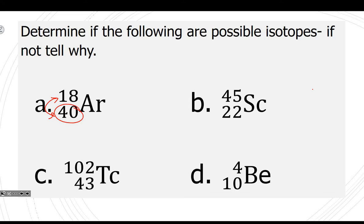On option B, you find element 22 on the periodic table, but the symbol given is Sc, which is wrong — so that's a problem, it's not the right symbol. For option C, 43 is technetium and 102 is close to its average atomic mass, so it could possibly be an isotope. It doesn't have to be the exact mass because that's an average of all different isotopes.